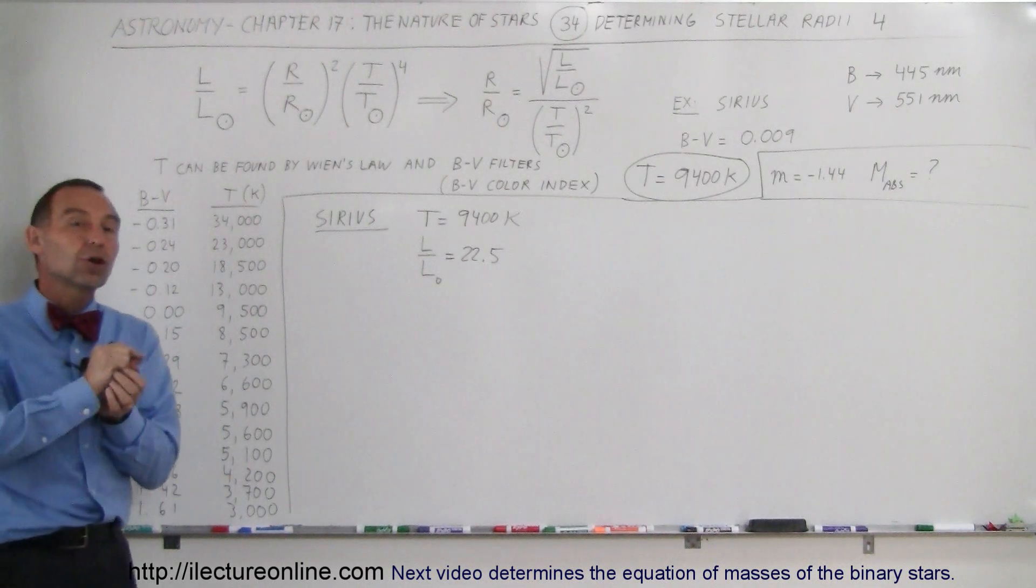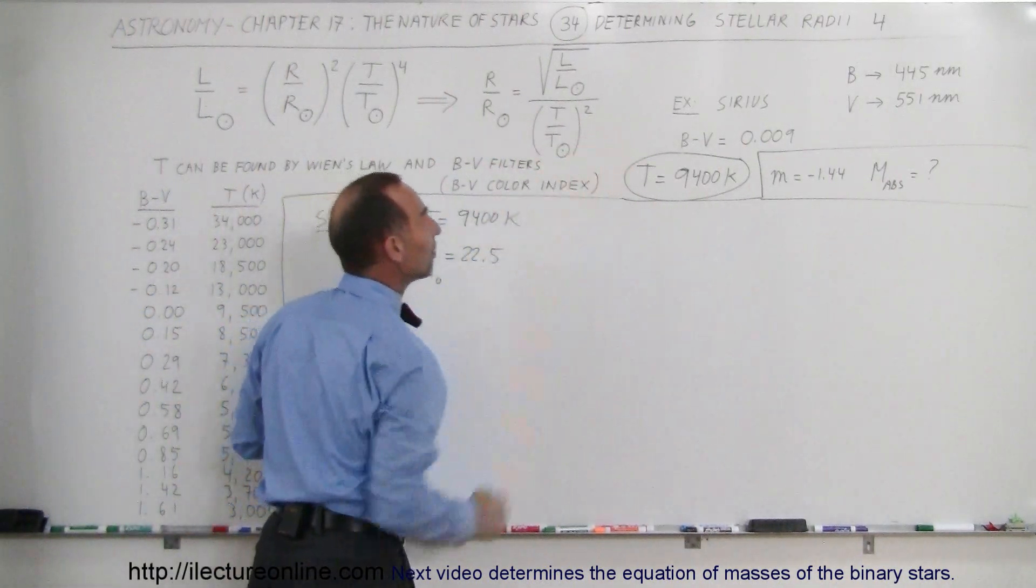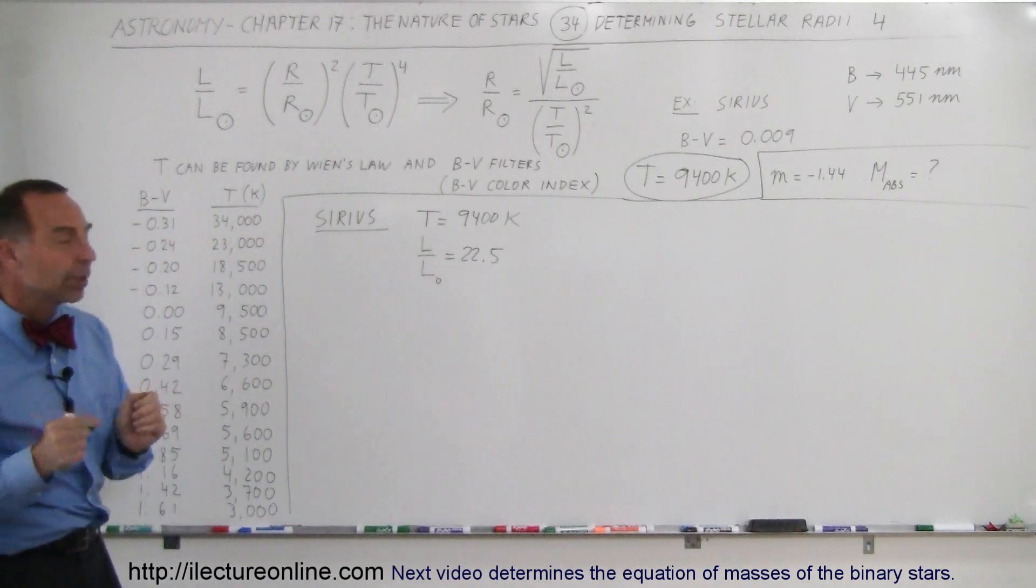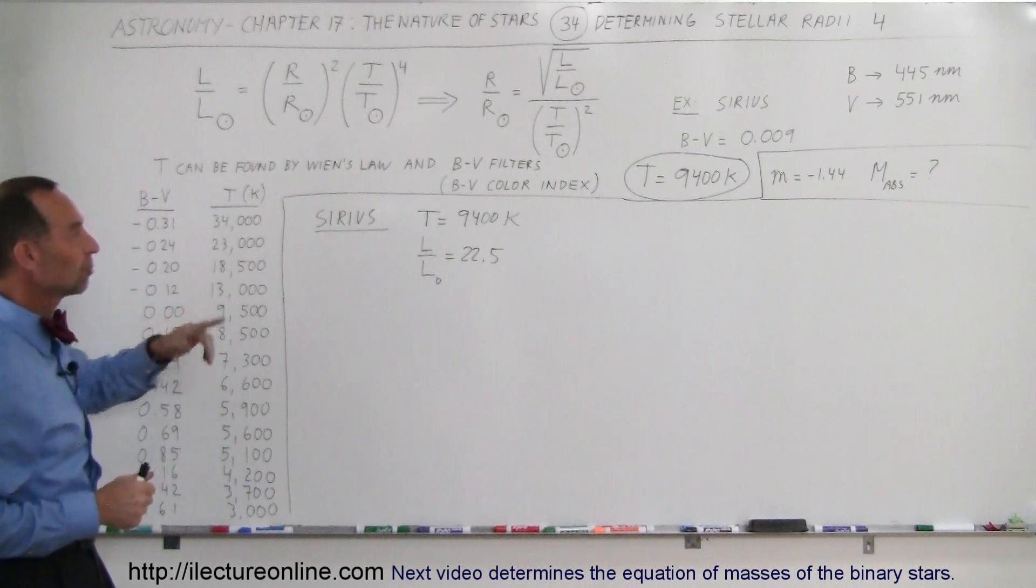In two videos ago we discovered how to find the temperature of a star using the blue and visible light filters. The relationship between those two allowed us to go to a table and figure out the surface temperature of a star.